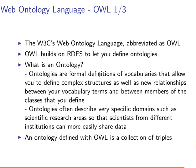So we have definitions of vocabularies, and they allow us to define complex structures. They also allow us to have new relationships between our vocabulary terms and between members of the classes that we define. Basically, we can define classes, vocabulary definitions, and then relationships or properties that link our vocabularies or classes together.